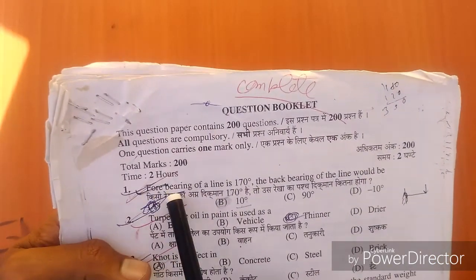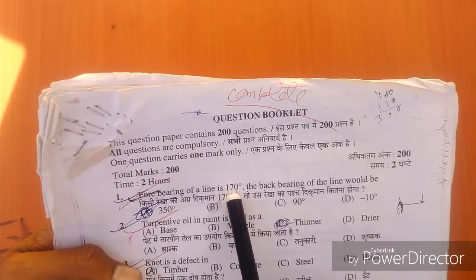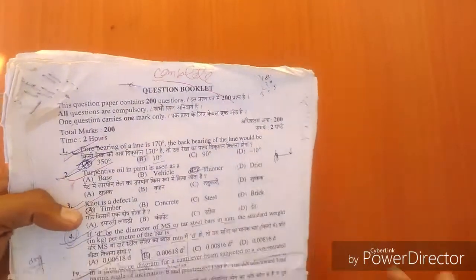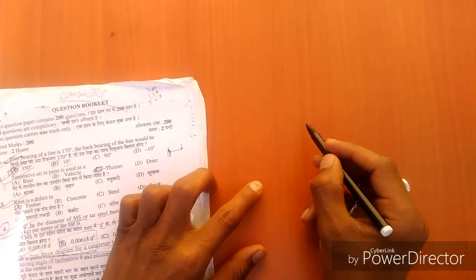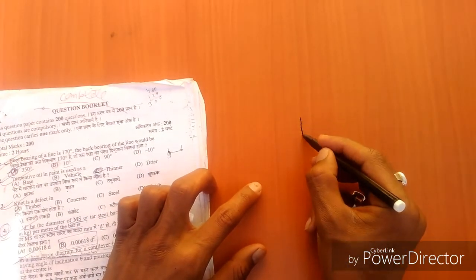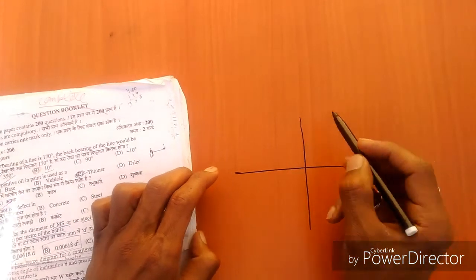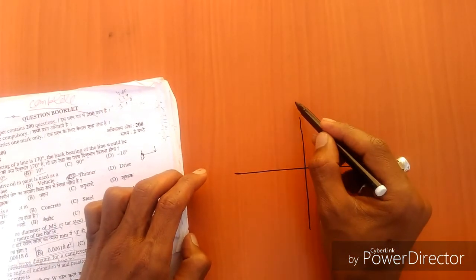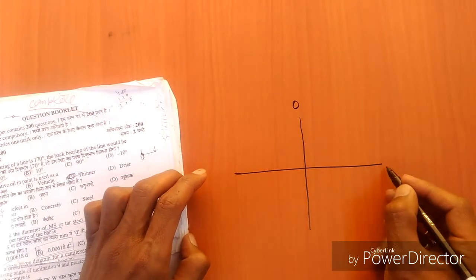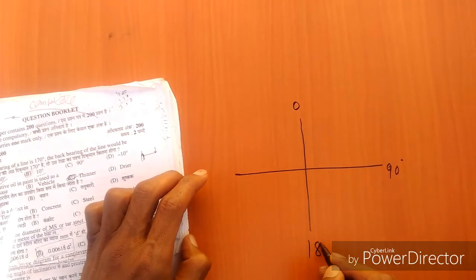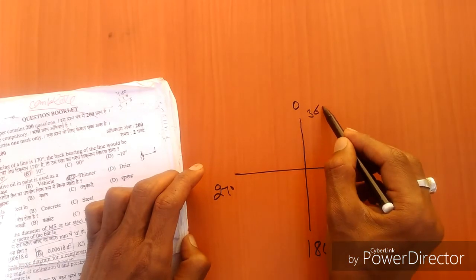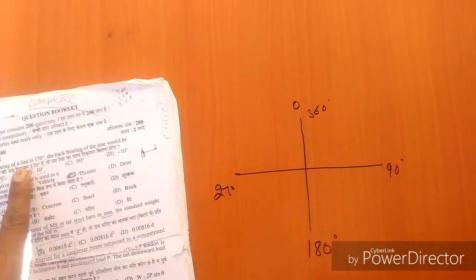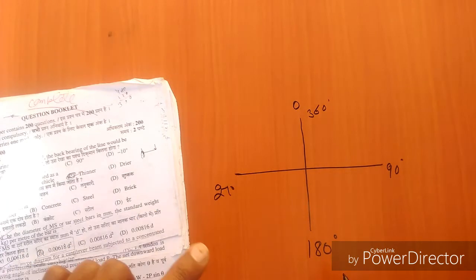The fore bearing of a line is 170 degrees. The back bearing of a line would be - so I will solve this question. This is a coordinate system: zero degrees, 90 degrees, 180 degrees, 270 degrees, and 360 degrees.